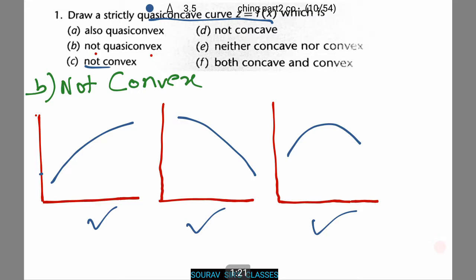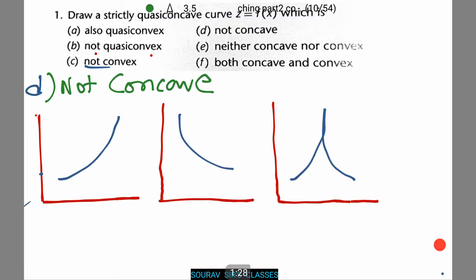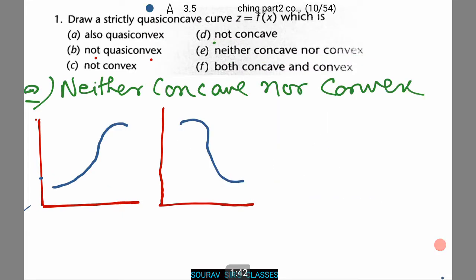Now let's try for all the rest of the three cases. These are the three cases for not-concave. Now for neither concave nor convex. For this there are only two conditions as given.